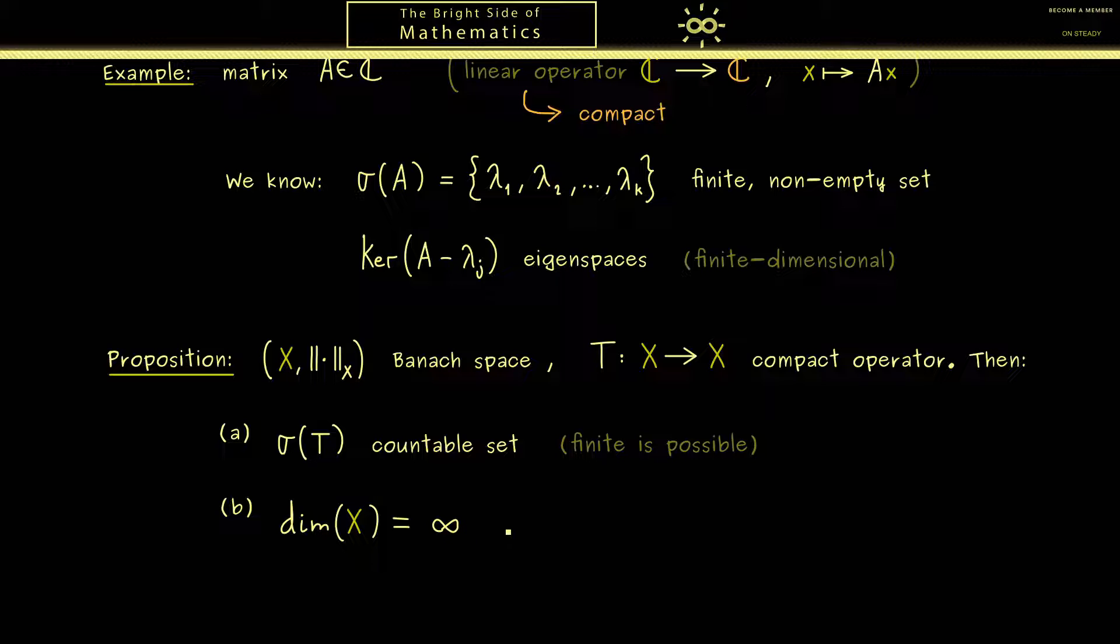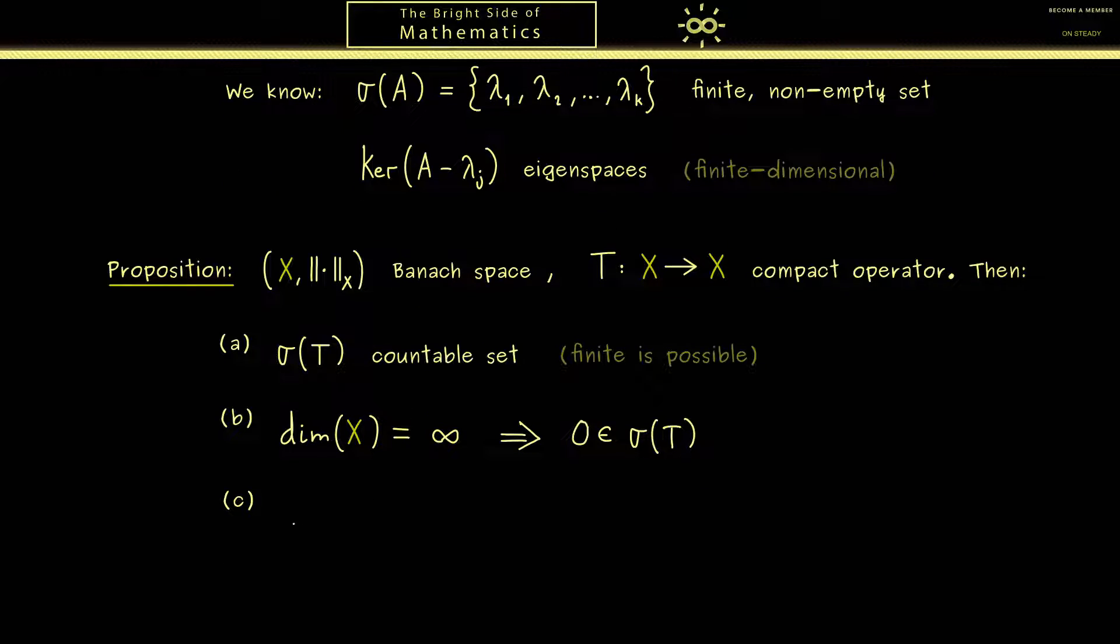However, in this case something special happens for compact operators. More precisely, we know that we have infinitely many directions that are sent to one compact set. And this implies that 0 is always an element of the spectrum. So this is what you can remember and you see it's a difference from the finite dimensional case. Therefore, the natural question is, what can we say about the spectrum of T without 0.